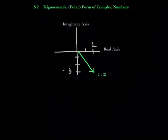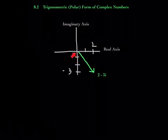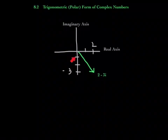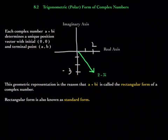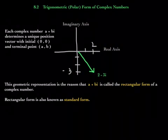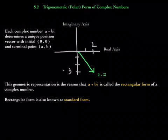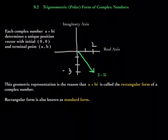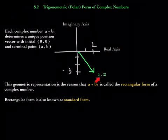Each complex number determines a unique position vector. This is a position vector — the initial point is at the origin, and this is your terminal point in quadrant 4. So each complex number determines a unique position vector. Because of this geometric representation, every complex number a plus bi is called the rectangular form of a complex number, also known as standard form. Rectangular form and standard form are the same thing.